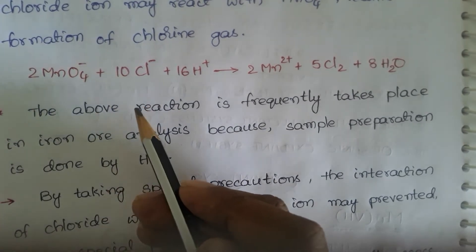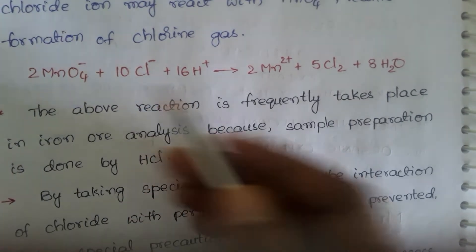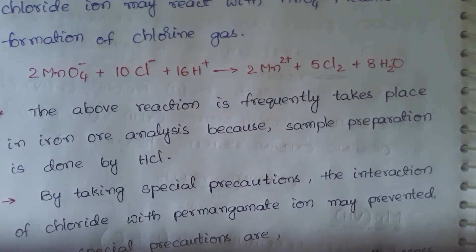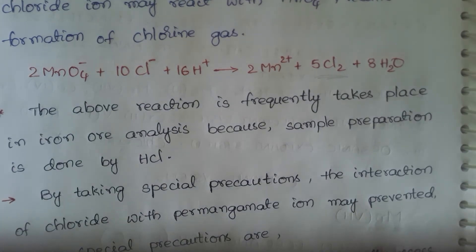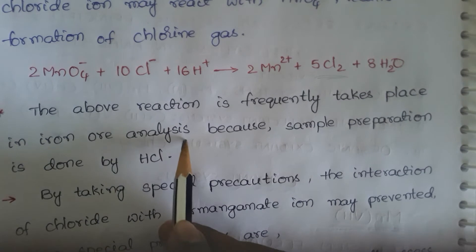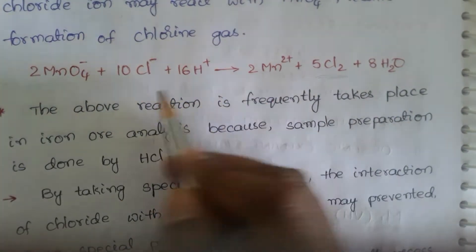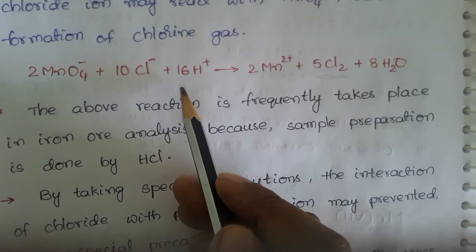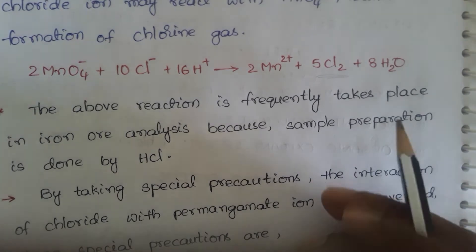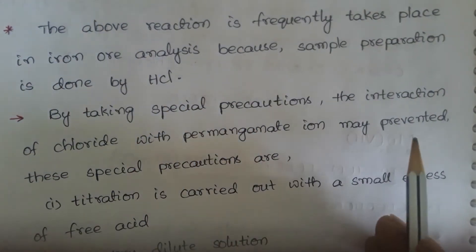If you use HCl as the acid medium for permanganate titration, it can produce chlorine gas which interferes with and disturbs the titration. This reaction frequently takes place in iron ore analysis because the iron ore sample is dissolved in HCl solution. By taking special precautions, the interaction of chloride with permanganate ion may be prevented.